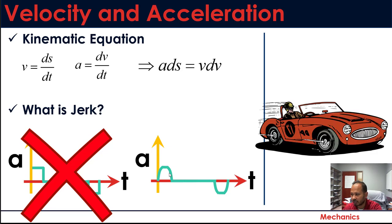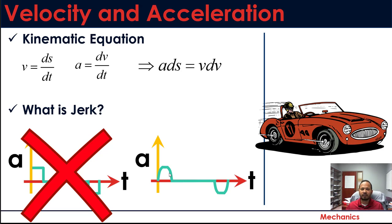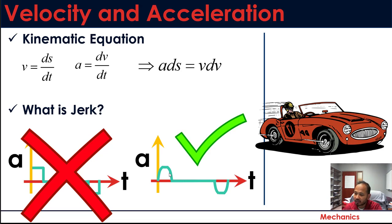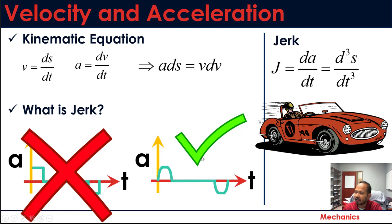If there is a change in acceleration, you can have a rate of change of acceleration with respect to time — and that is jerk. For example, when you're driving and a traffic light turns green, you apply acceleration. You don't reach that acceleration instantly; you feel that push — that's the jerk you're actually feeling. The actual curve shows a gradual change in acceleration, and jerk is defined as that change in acceleration with respect to time.